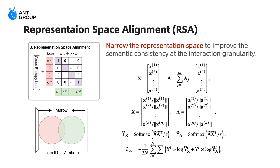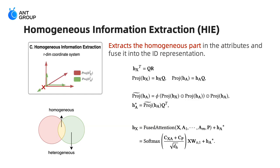The goal of representation space alignment is to narrow the space of IDs and attributes to improve semantic consistency at the interaction granularity. We apply contrastive loss and adjust its weight using the balance parameter lambda, then combine it with the cross-entropy loss. The space alignment brings the two distributions closer, but still cannot avoid the heterogeneous part. Therefore, we employ an orthogonal decomposition to extract the homogeneous part and then fuse it into the ID representation.